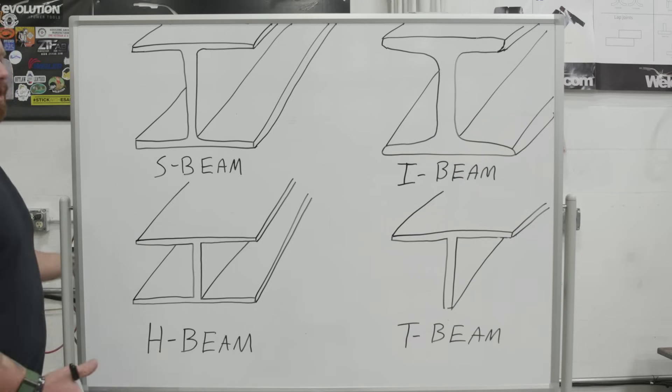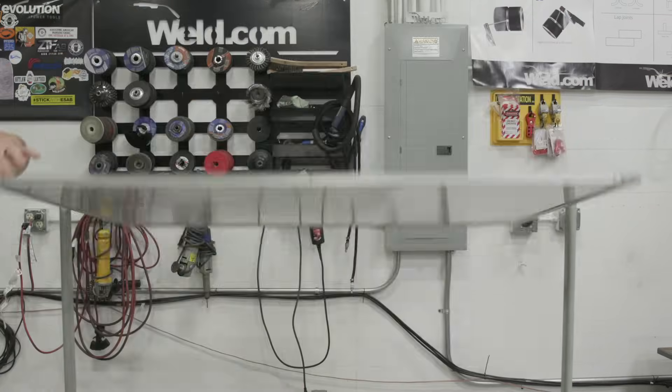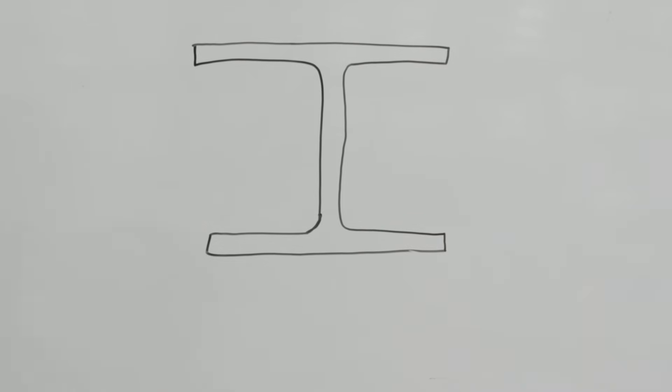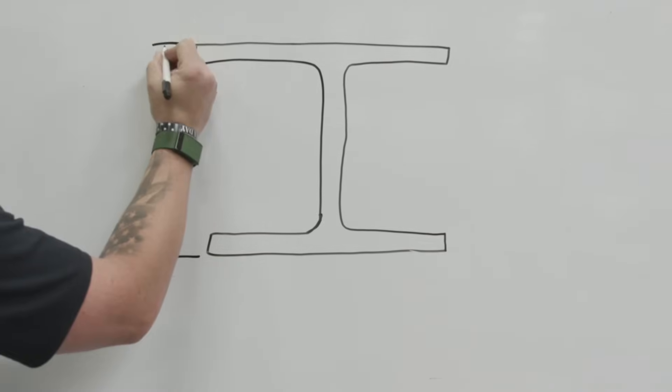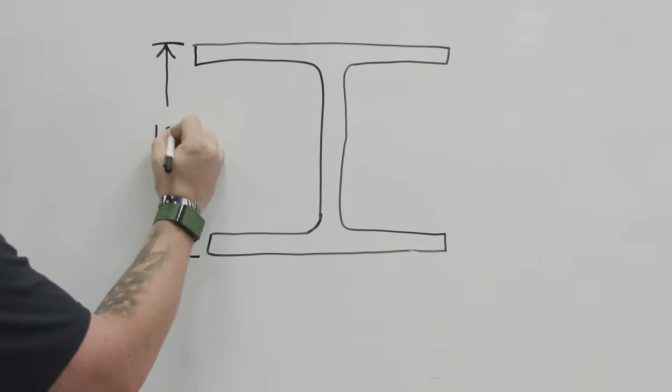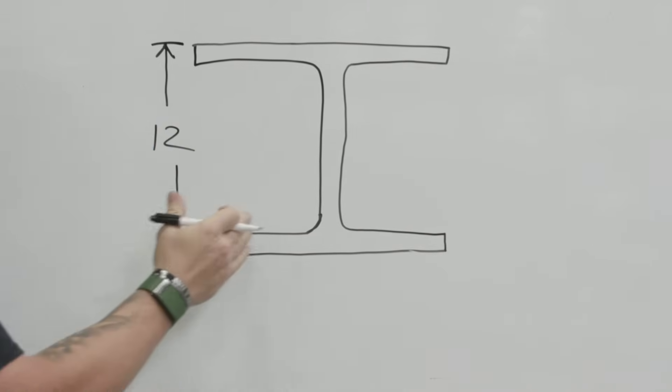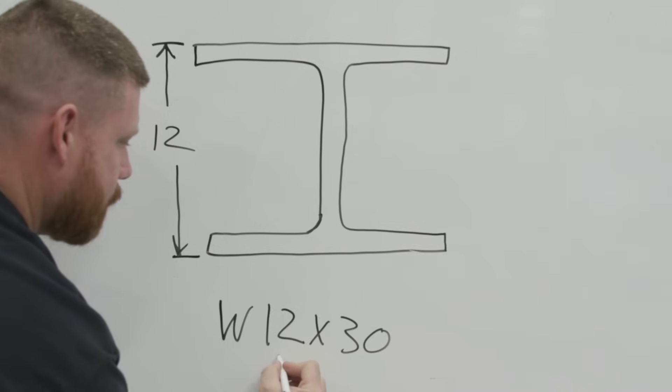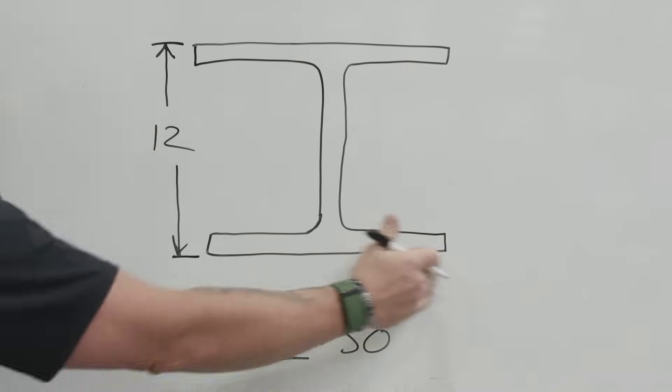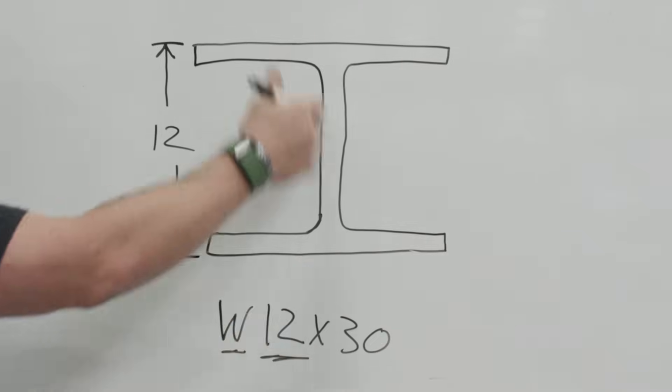Let's go ahead and talk about how these are going to be called out on a set of prints or how you're going to be able to order these. So we'll just use the general eye shape for this exercise. So typically what we have is a dimension here, and let's just call this 12. And let's say that this is actually 30 pounds per linear foot. So this would be a W 12 by 30. The W stands for wide flange beam. The 12 is going to be the nominal depth.